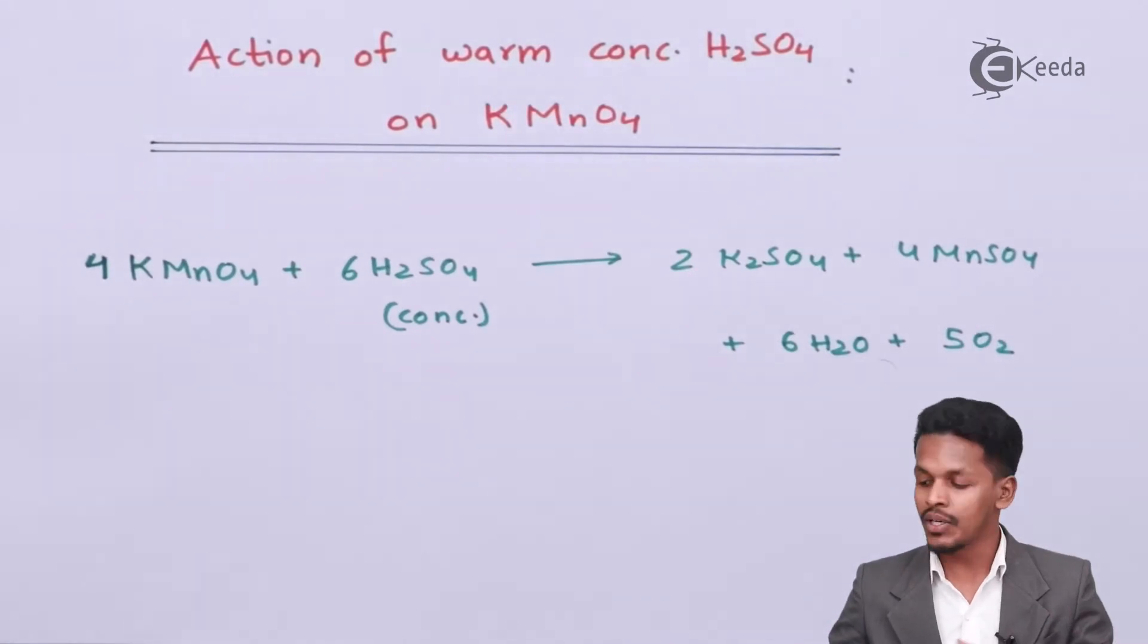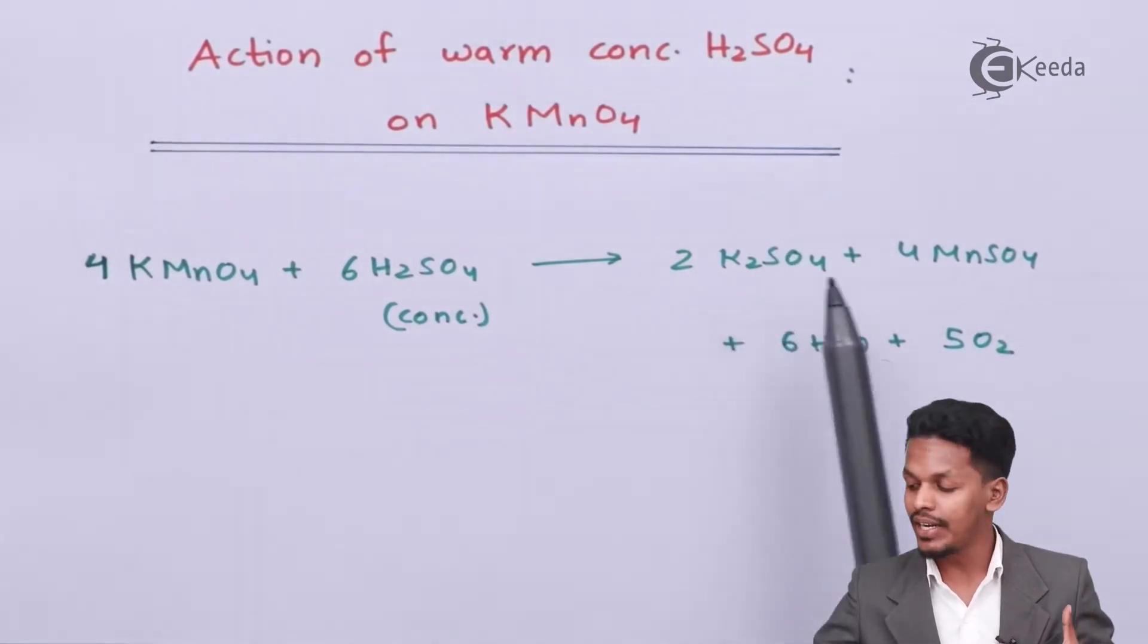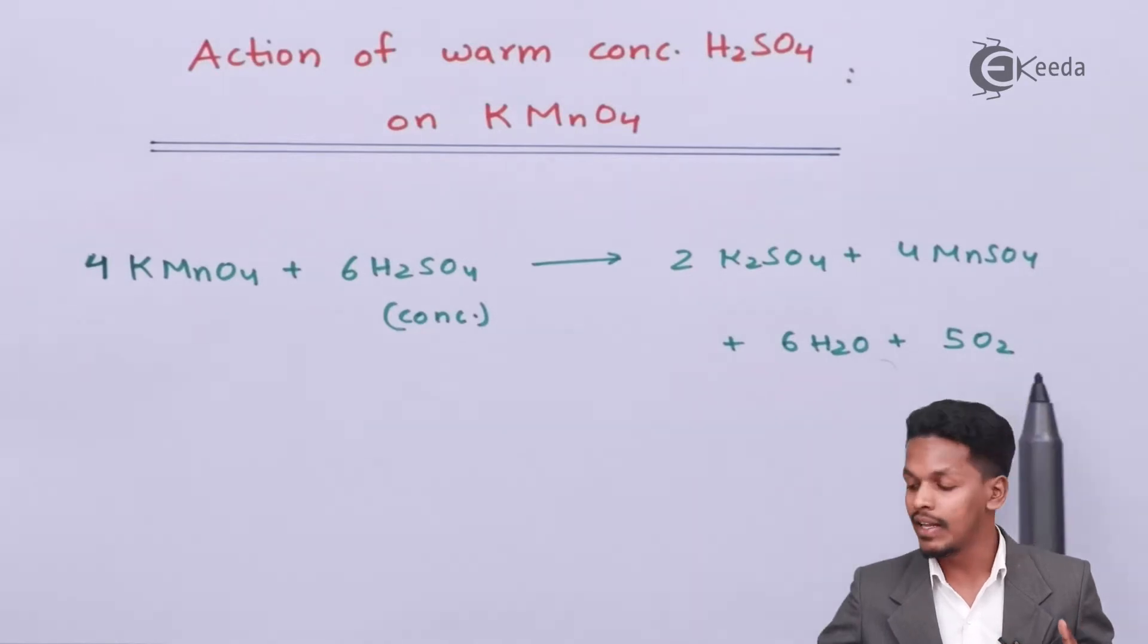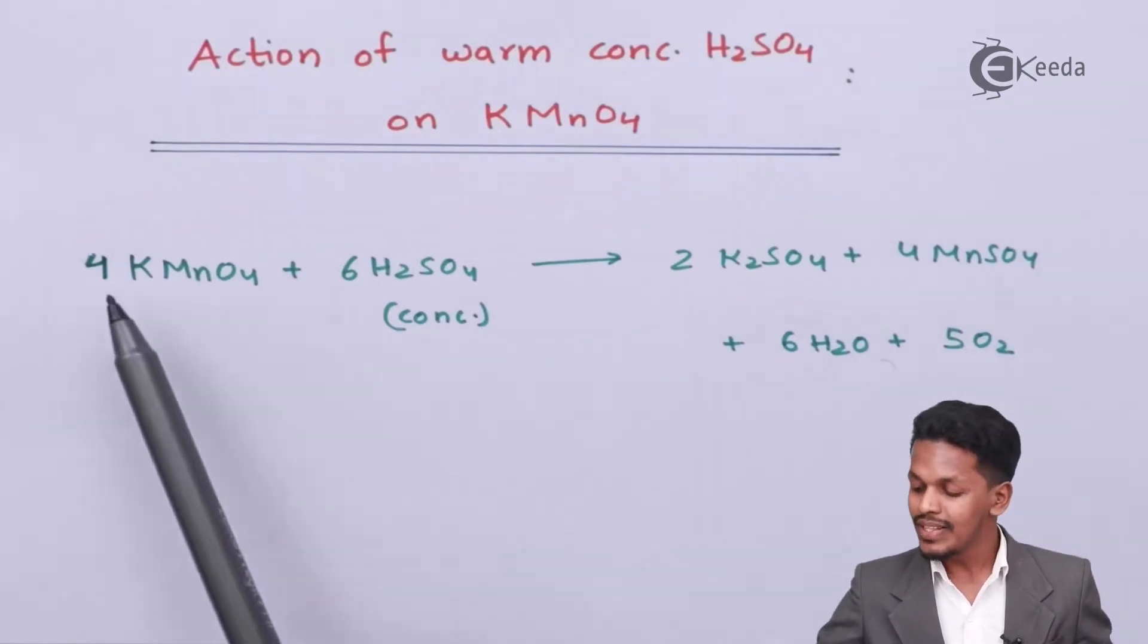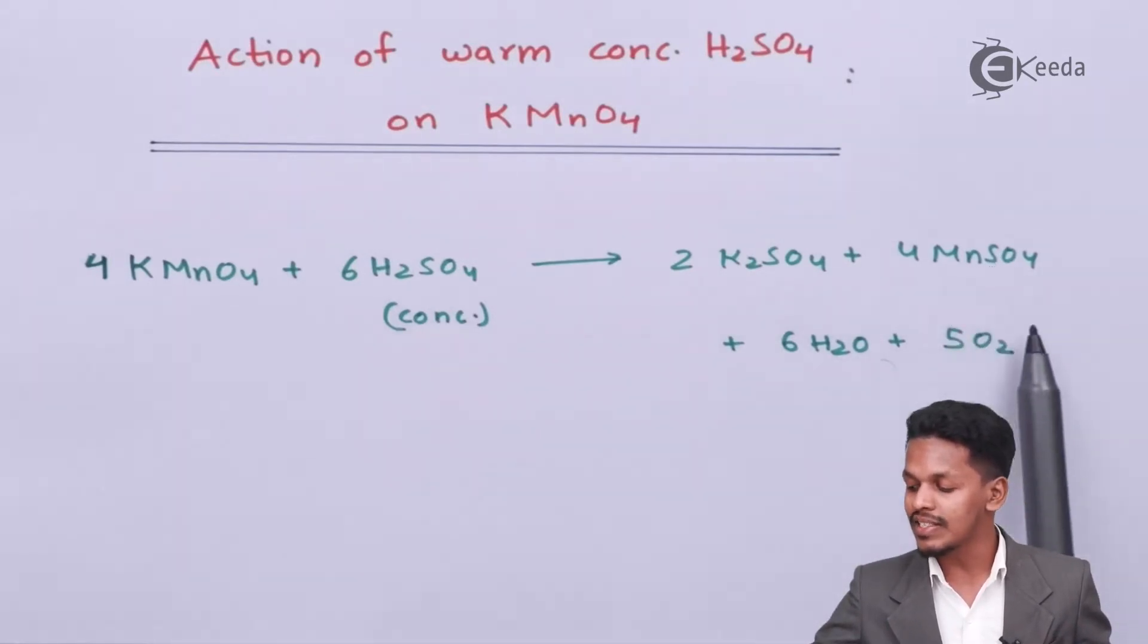The products are potassium sulfate, manganese sulfate, water, and 5 moles of O2. The reaction proceeds with evolution of O2, which is different from the previous reaction.